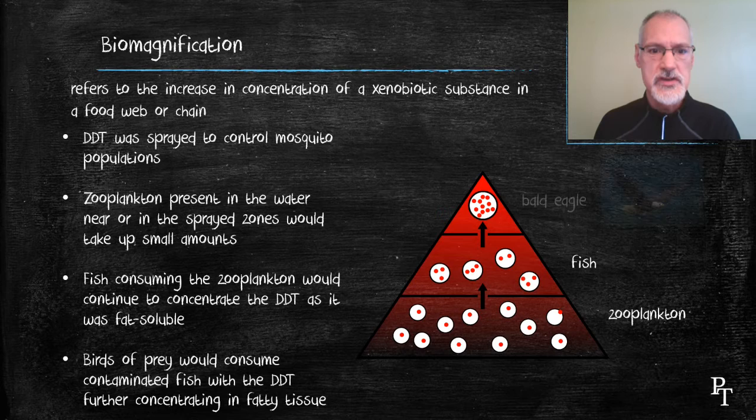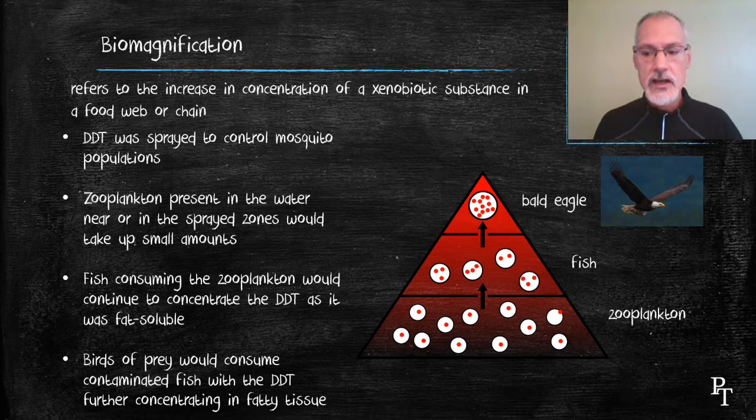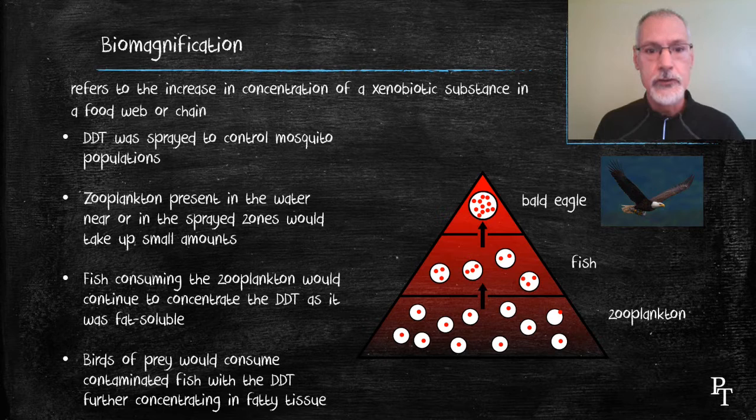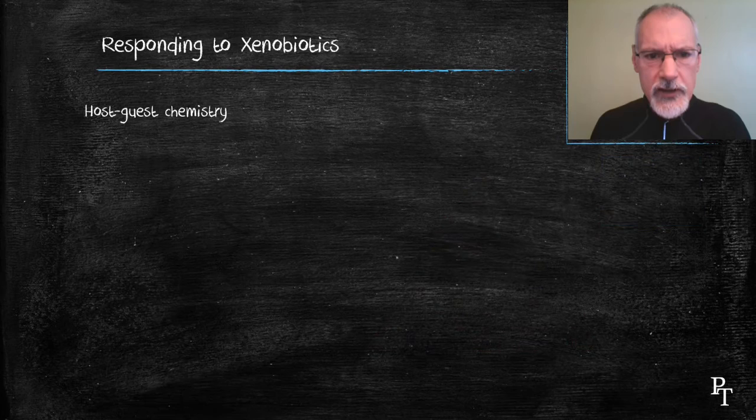Organisms which then in turn consume the fish, birds of prey in this case, eagles, would essentially then continue to concentrate the DDT in their fat tissue. Essentially now consuming all of the pollutant, all of the DDT that was present in the zooplankton has now been concentrated in one organism, the bald eagle. Any top predator would suffer from this effect.